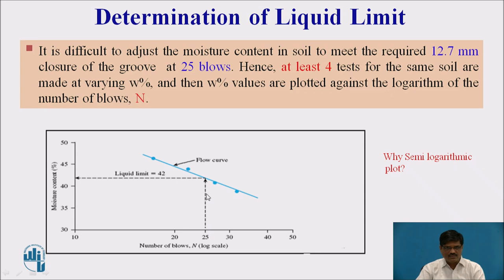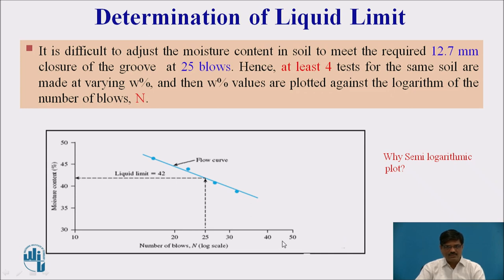This is how we perform the test in the laboratory with Casagrande's apparatus, taking a minimum of four trials to obtain the flow curve. On the x-axis, the number of blows are plotted on a log scale, therefore it is called a semi-log plot. The number of blows may vary from one up to even 100 or 200, and plotting on a log scale reduces the length of the axis without compromising on accuracy. Therefore, it is a semi-log plot to find the liquid limit.